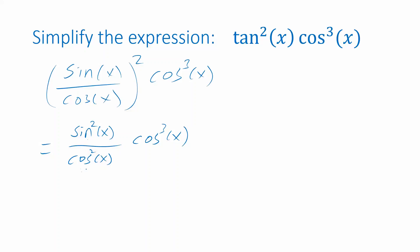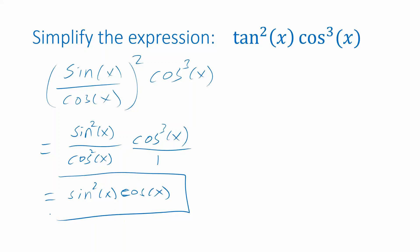Now we can simplify by observing that we can cancel the cosine squared in the denominator with two of the cosine factors in the second expression. Thinking of the second expression as a fraction over one, we cancel those two factors between numerator and denominator, leaving one in the denominator, so our answer is sine squared of x times cosine of x. Notice that the exponents are smaller here — 2 and 1 instead of 2 and 3 — so we recognize this as a simpler form.